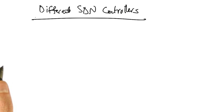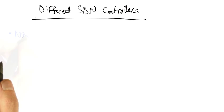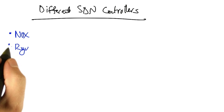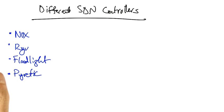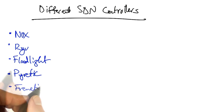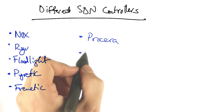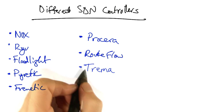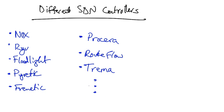There are a number of different SDN controllers that exist, including Knox, Ryu, Floodlight, Pyretic, Frenetic, Procera, Routeflow, Tremma, and the list goes on.